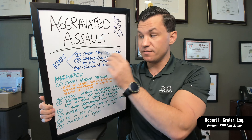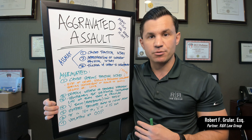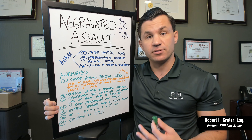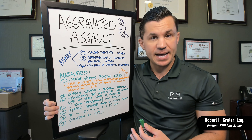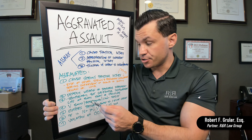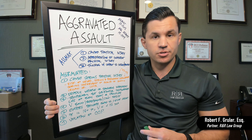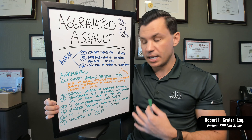The third aggravating factor involves substantial but temporary disfigurement. If somebody is seriously injured, needs stitches, is disfigured but will eventually heal, that rises to this level. Similarly, if a person loses the function of a body part or organ, or if there is a fracture — a broken bone, fractured ribs — something more substantial that doesn't rise to permanent serious physical injury but meets these criteria, that's also a factor that aggravates it into an aggravated assault case.